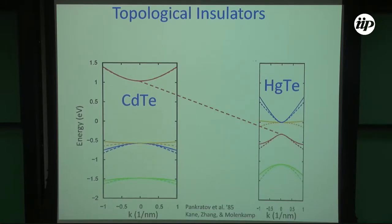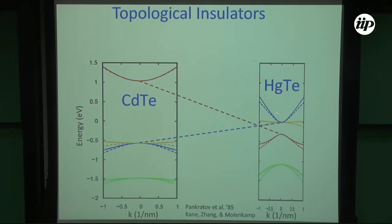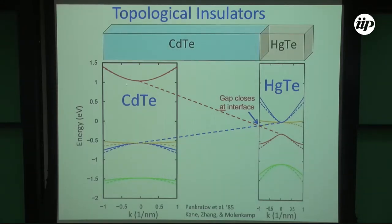Most of the valence bands are from P-type states. In mercury telluride, if you imagine an electron going from this material to the other, what happens is that the P states appear as the conduction band, and there is this inversion. Now, if you imagine some electron going from the conduction band into the other material, it necessarily has to go through a region where the gap closes. That has to happen right at the interface. This is a hand-waving way of explaining why you should have a metallic interface between the two materials.